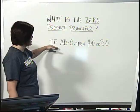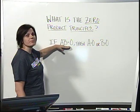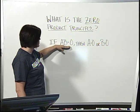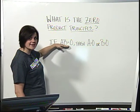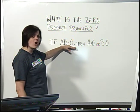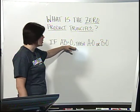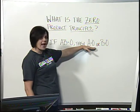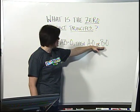It simply states that if I'm multiplying factors together, so if I'm creating a product A times B, and that product is equal to zero, the only way for that to occur is if either A is zero or B is zero.